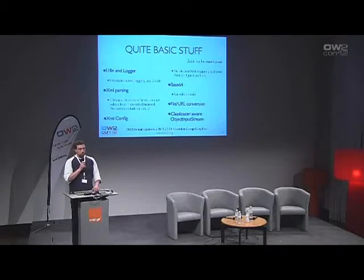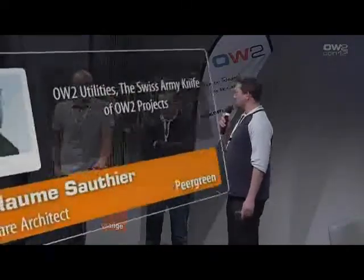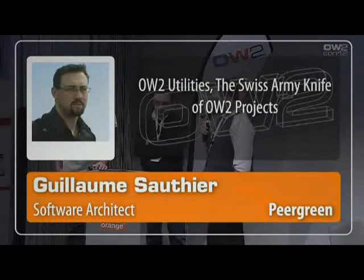We also have stuff around XML parsing — how to obtain a parser and how to easily parse a document. Based on this, we have an XML configuration component which basically maps Java objects to XML, so you can read your XML and directly have object instances. It's some kind of simple JAXB. We also have encoding and decoding around Base64, file-to-URL conversion tools, and a cluster-aware object input stream.